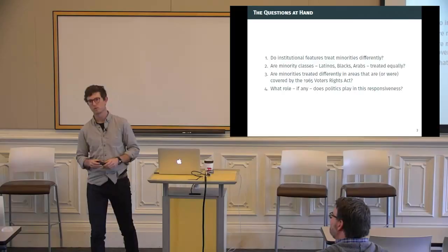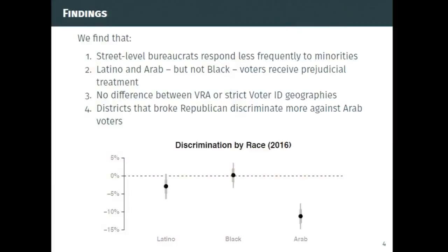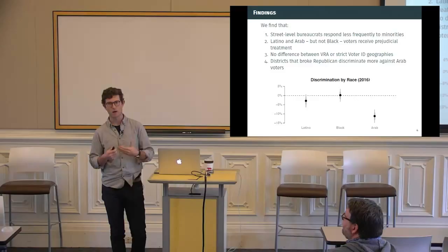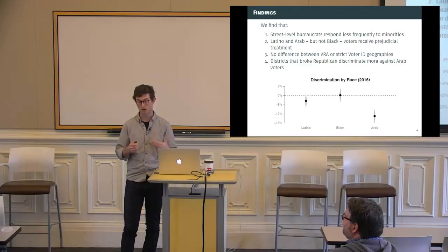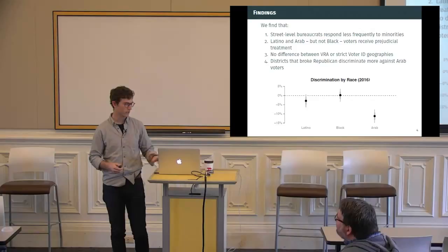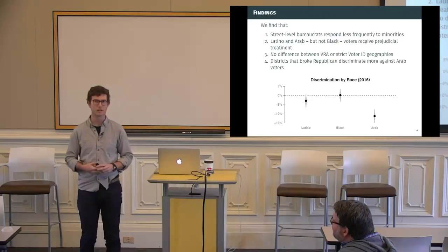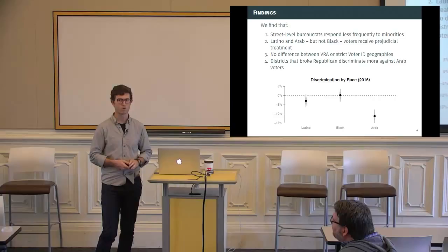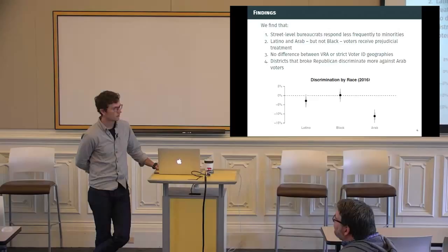To keep from burying the lead here, we find pretty clear evidence of discrimination against minority voters. We find that street-level bureaucrats, these are the people who are fielding questions from voters, they're responding considerably less frequently when minorities are asking the questions than when whites are asking the questions. Within the minority class, though, it's not an equivalent discriminatory practice. Instead, we're finding that there's no evidence of differential treatment of blacks versus whites, though there is evidence of strong evidence of Arab names being treated much worse than white voters. People with Arab names were responded to at a 14 percentage point lower rate than were whites.